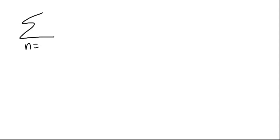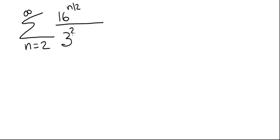We're going to look at the series from 2 to infinity, 16 raised to the n over 2 power divided by 3 raised to the 2n plus 1 power. We want to know if this series converges or diverges, and if it converges, what does it converge to?